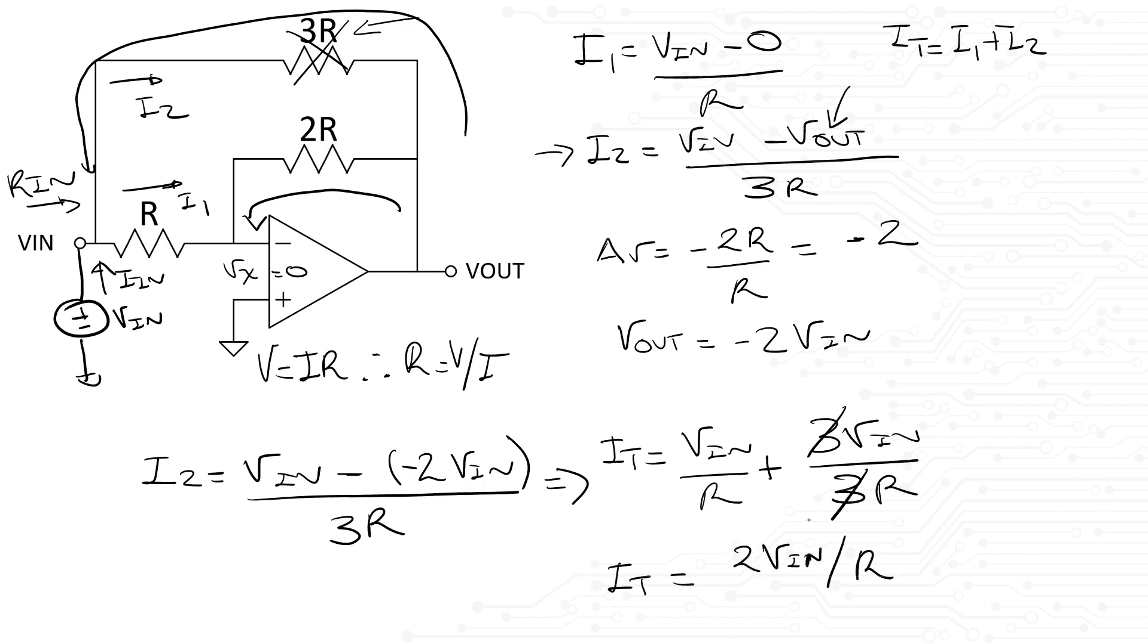Remember that we initially said that resistance is equal to voltage divided by current. So, rearranging this equation we can find that the input impedance is nothing more than R divided by 2. That's our input impedance.